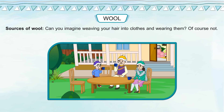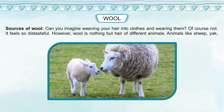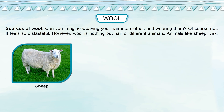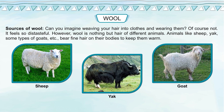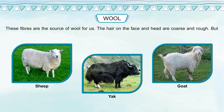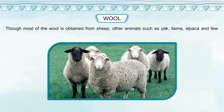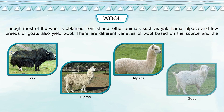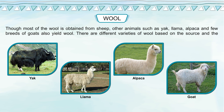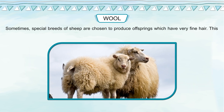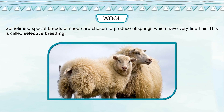Wool is nothing but the hair of different animals. Animals like sheep, yak and some types of goats bear fine hair on their bodies to keep them warm, and these fibers are the source of wool. The hair on the face and head are coarse and rough, but the hair on the body are fine and softer, providing the fibers for wool. Though most wool is obtained from sheep, other animals such as yak, llama, alpaca and certain breeds of goats also yield wool. Special breeds of sheep are sometimes chosen through selective breeding to produce offspring with very fine hair.